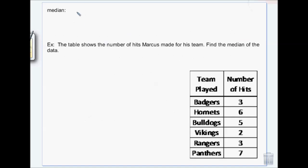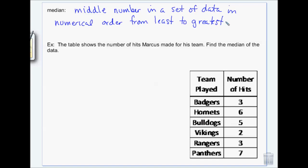The median is just the middle number in a set of data. You have to put the numbers in numerical order from least to greatest in order to find the median. You can't just take the list as it is and say that's the middle number. They have to be in order.